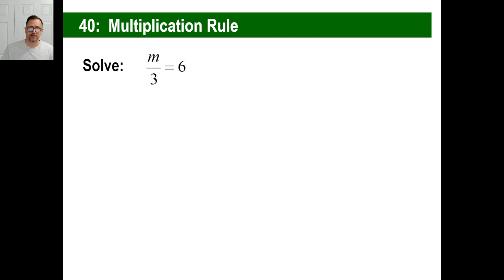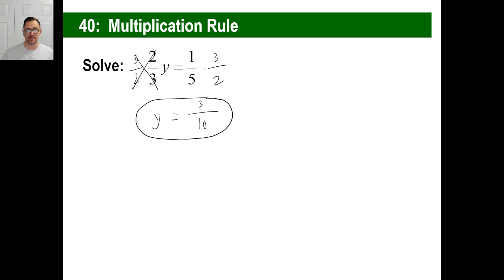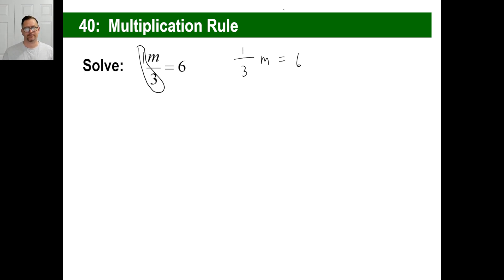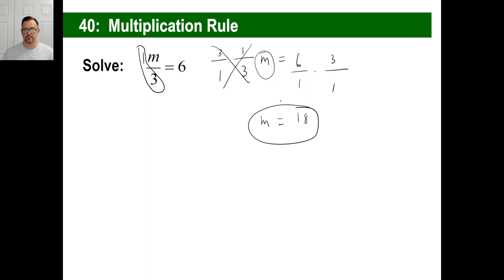Let's try another one: M divided by 3 equals 6. If you don't see a number in front of the variable, you can put 1 as a coefficient. You can make it look like a fraction — 1-third M equals 6. We all know the reciprocal of 1-third is 3 over 1. Multiply by 3 over 1, that goes away, M is all you have left. M is equal to 6 times 3. Finished.